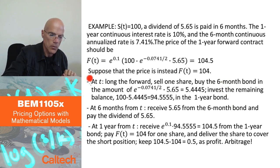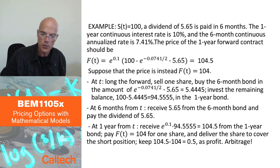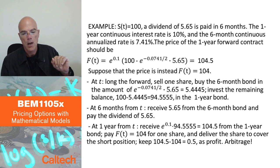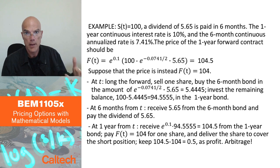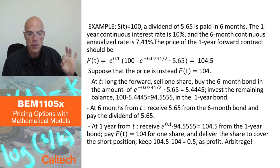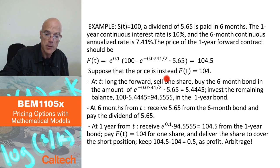At small t — today — I go long in the forward because it looks cheap. I also sell short one share. Here's the difference: if I sell short one share of the stock and that stock pays dividends, I have to pay the dividends to the holder of the stock. When you're selling a stock, you're selling all the rights that go with the stock, including the rights to receive dividends. So when you sell one share, you need also to pay the dividends.